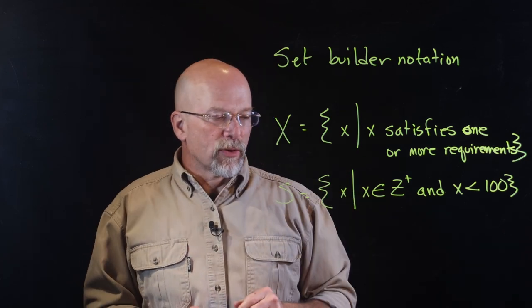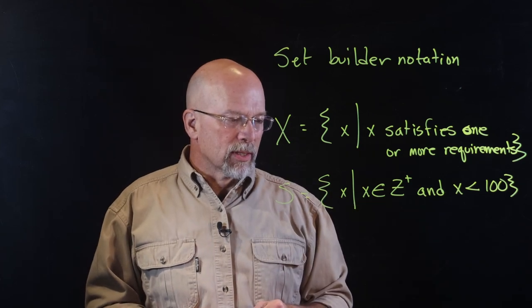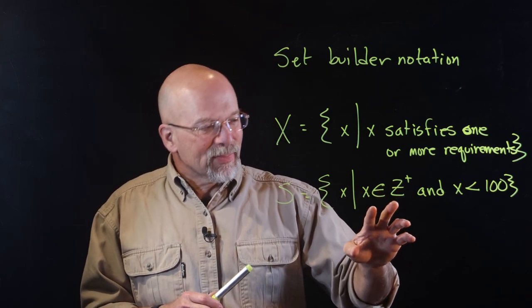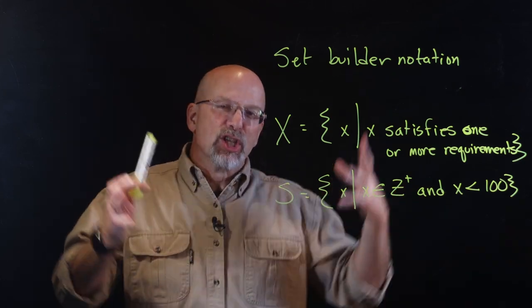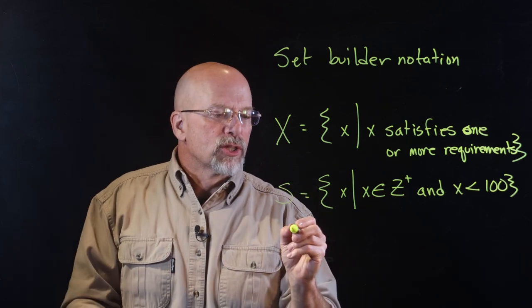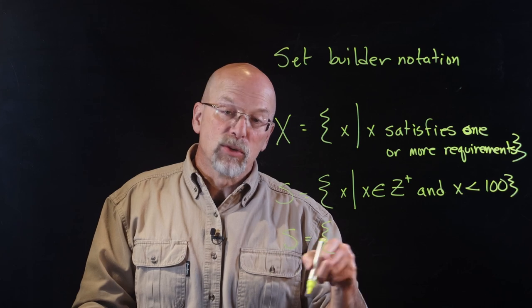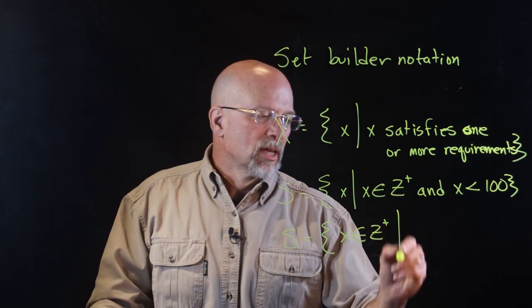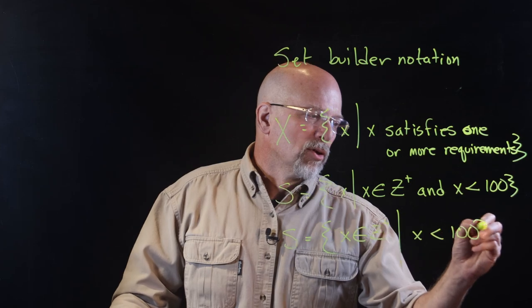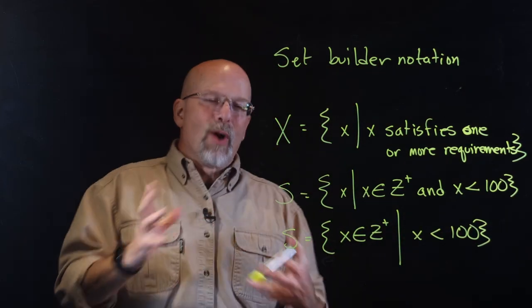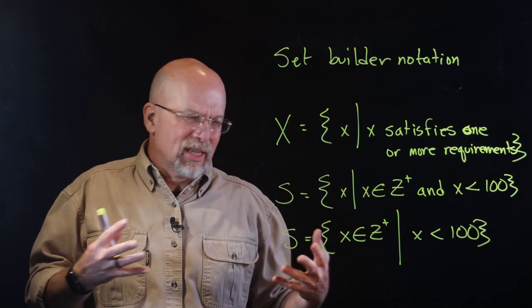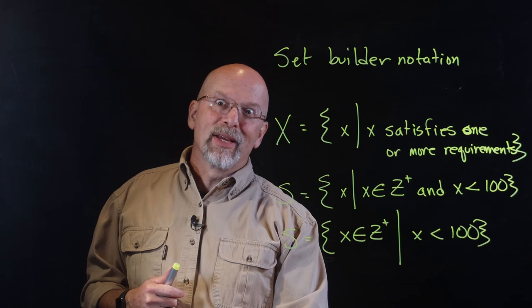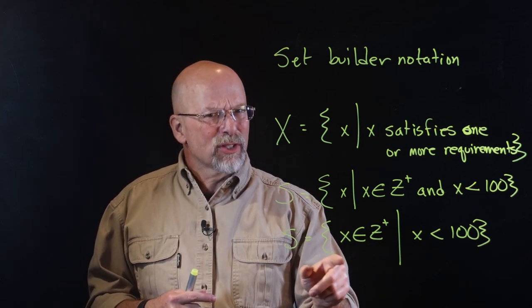Some people use a colon instead of the vertical pipe, but we'll use the vertical pipe in this class. Another way to write this: S = {x in the positive integers | x < 100}. This specifies the universe from which the requirements are applied, giving a practical way to display what we're trying to describe in set theory.